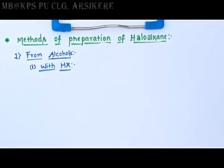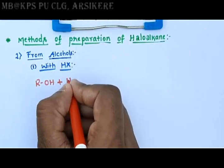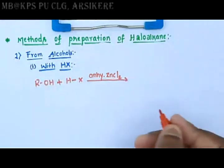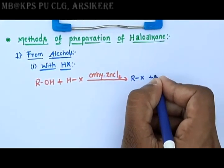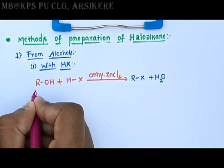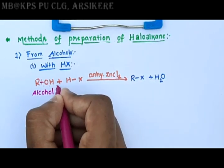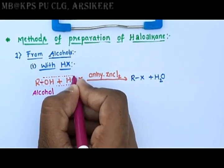Haloalkanes can be prepared from alcohols with HX. When alcohol is treated with hydrogen halide in the presence of anhydrous zinc chloride, it gives a product RX plus H₂O. When the bond between R and OH undergoes dissociation, R and OH become R⁺ and OH⁻. Similarly, the hydrogen halide bond breaks down.